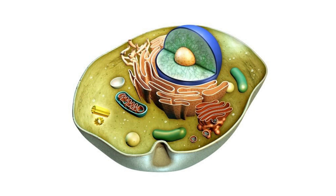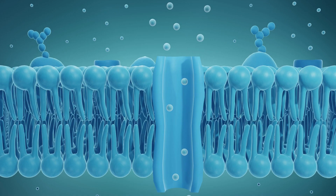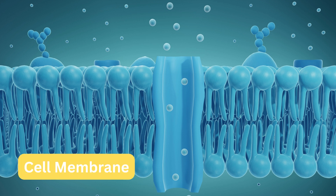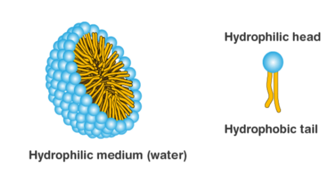Inside a cell is where metabolism takes place and genetic information is stored, under regulated conditions, or homeostasis. The cell membrane is semi-permeable, meaning it lets some things through while preventing others. Now that we know about lipids, we are ready to understand this outermost layer of the cell in more detail, where the molecules arrange themselves with the hydrophilic heads facing out and the hydrophobic tails pointing in, except that instead of a micelle it is a phospholipid bilayer that engulfs the contents of the cell.